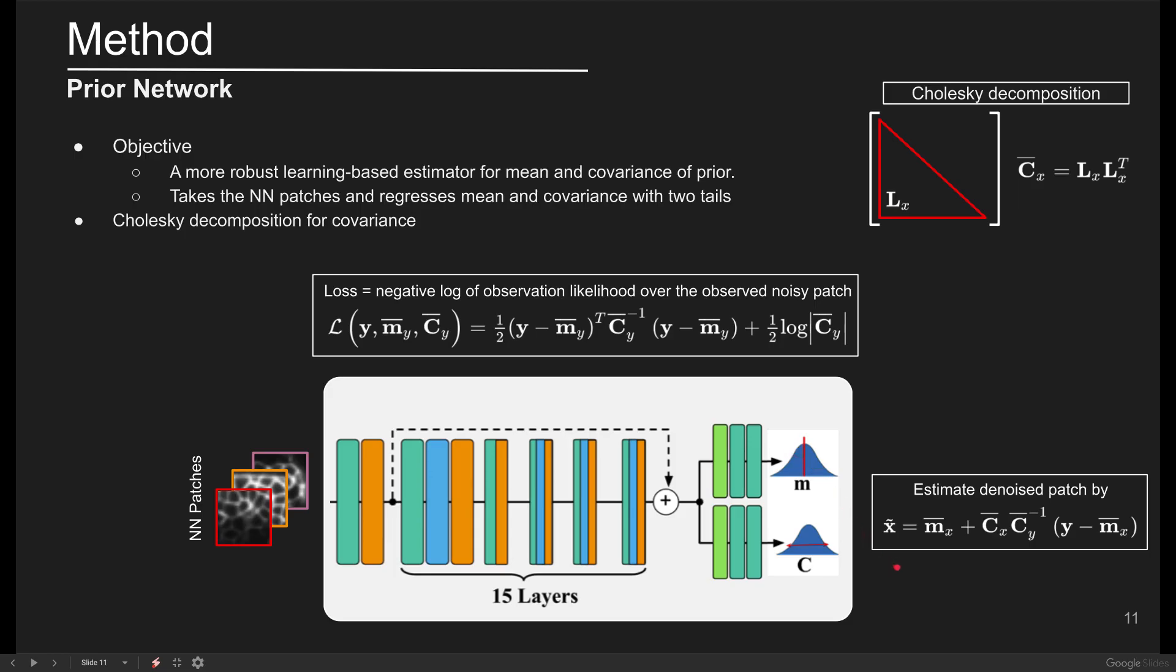When the network converges with the noisy corrupted patch by feeding its inferred neighbors to the prior network and estimating MX and CX followed by calculating the CY, then the MAP equation is used to obtain the denoised patch.